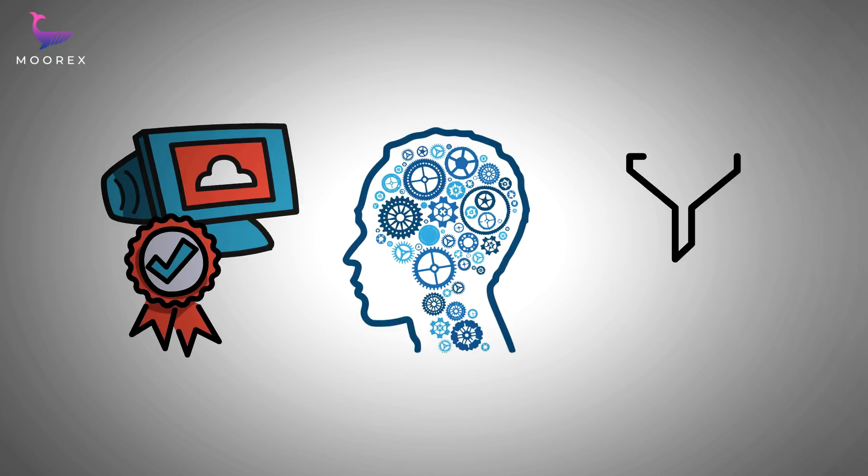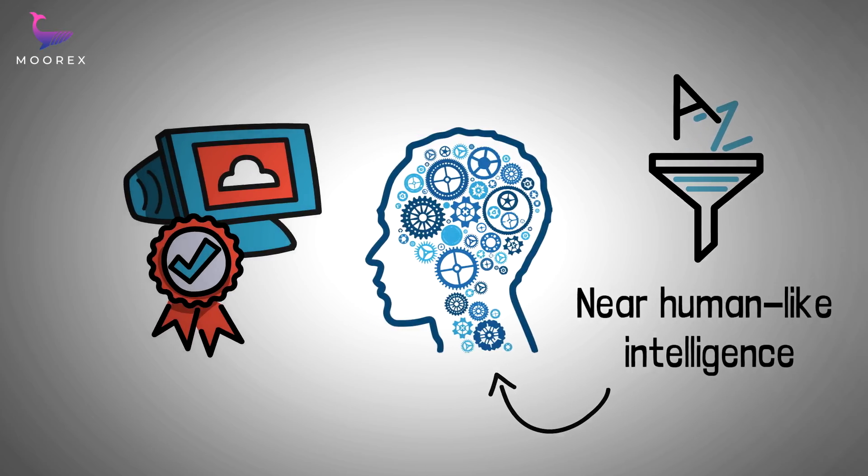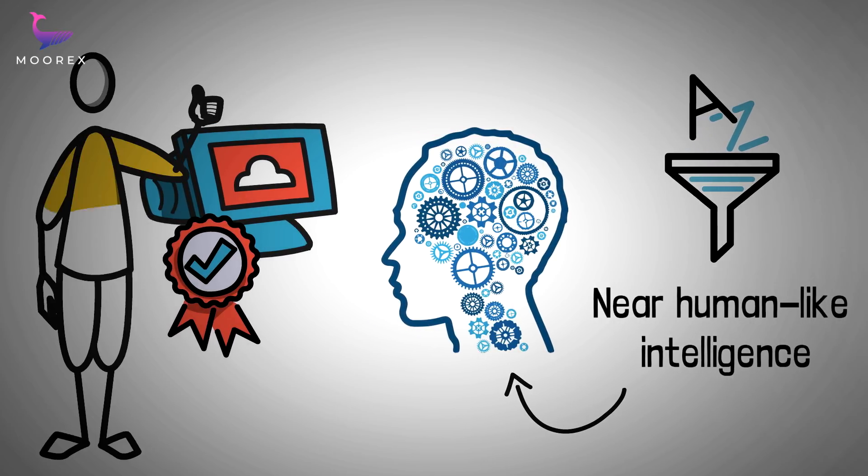The internet would be able to process information with near human-like intelligence with the use of AI. This way, the internet can be tailored to suit the specific needs of every individual.